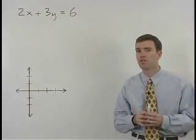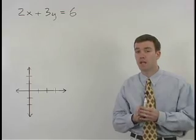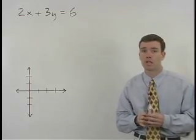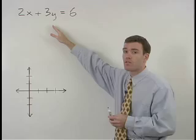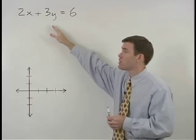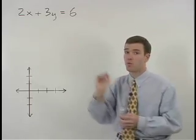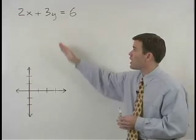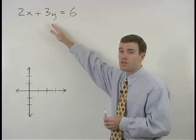Remember that in slope-intercept, or y equals mx plus b form, the y is by itself on the left side of the equation. So our first task in this problem is to get y by itself on the left side of the equation.